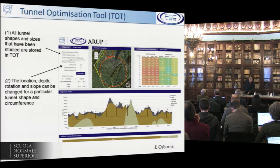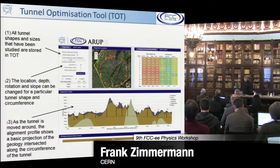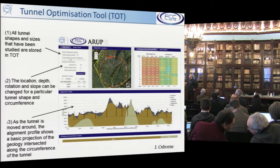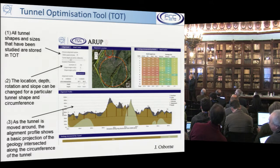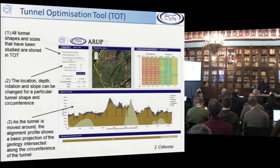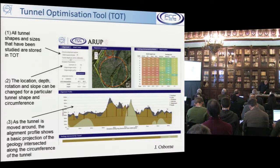This allows you to specify location, depth, rotation, slope, and the shape. Then one can move the tunnel around and get a display where one can see the depth and the different geological layers, and optimize — trying to minimize the total depth of the access shafts, maximize the location inside the softest layer, minimize the length of the tunnel in other geological areas. One can tilt it and move it up and down. One also gets a graphical display with a color code indicating geological difficulty.